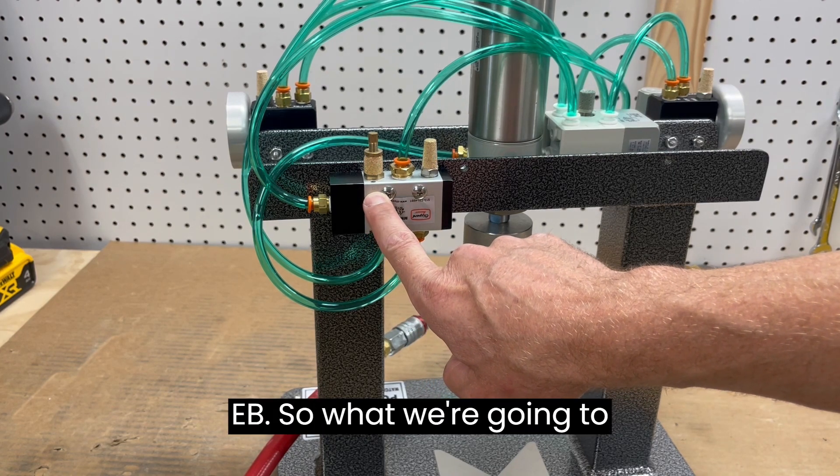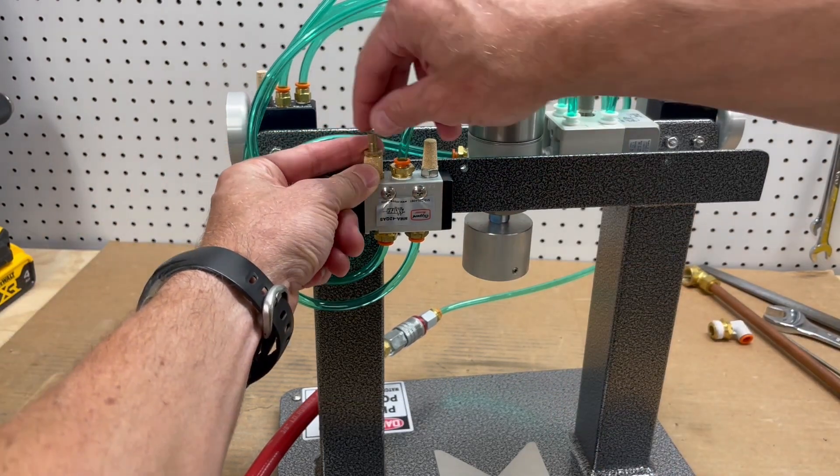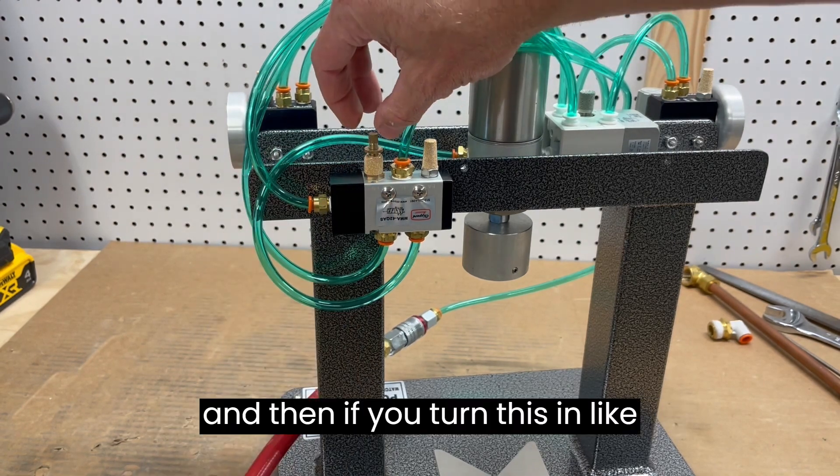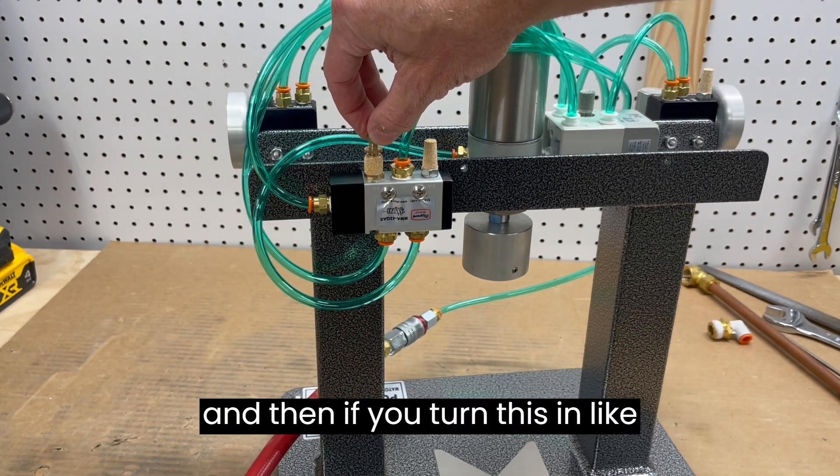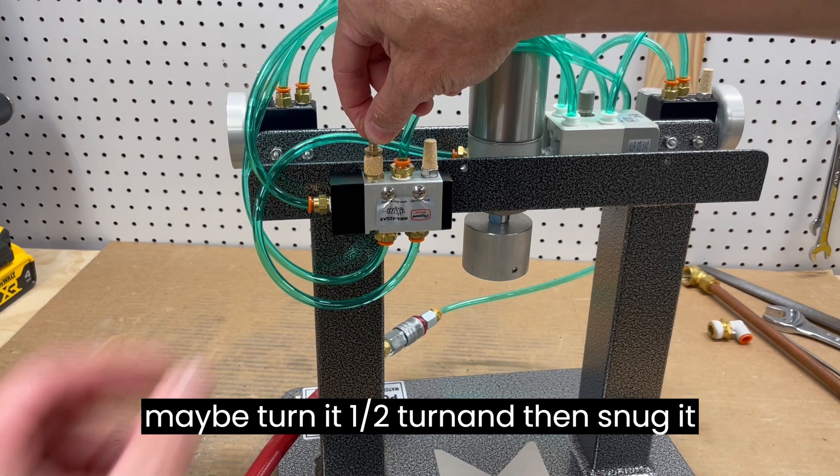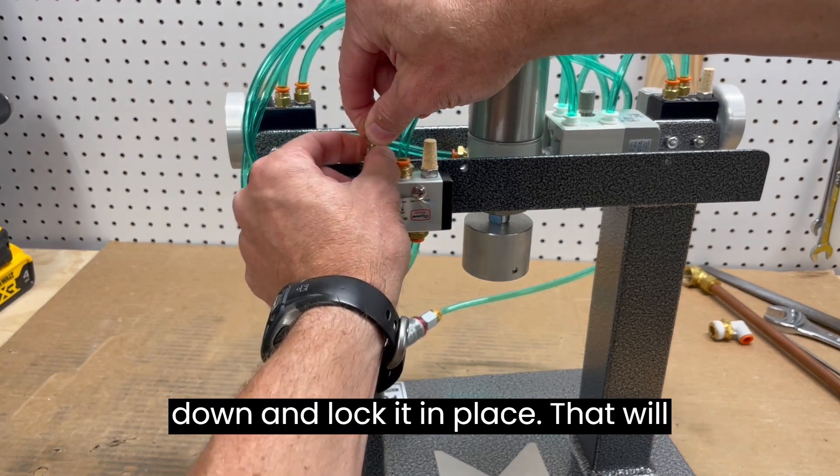So what we're going to do is loosen this lower lock nut. And then if you turn this in clockwise as you're looking down, maybe turn it a half turn and then snug it down and lock it in place.